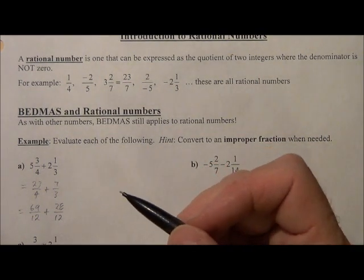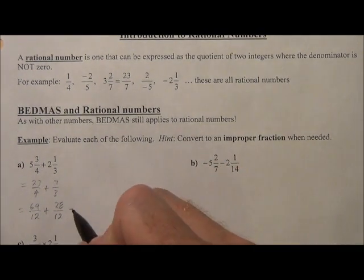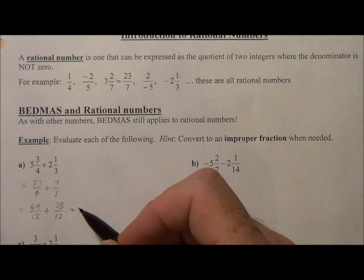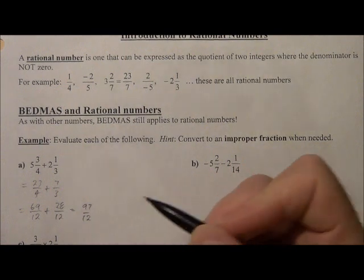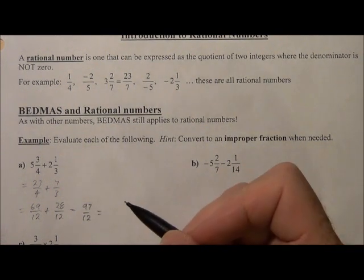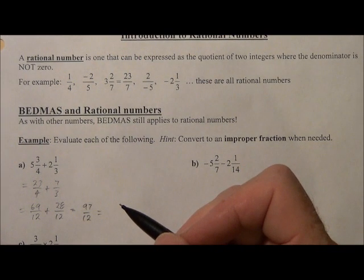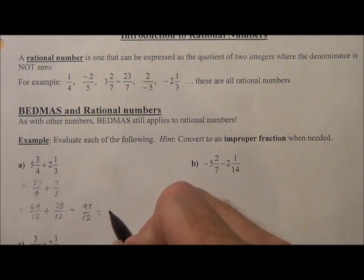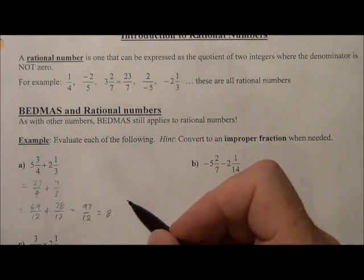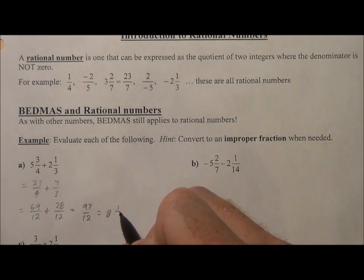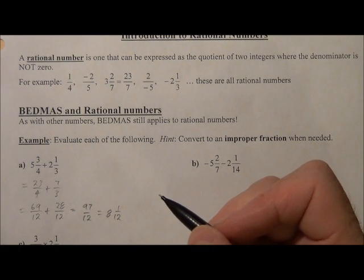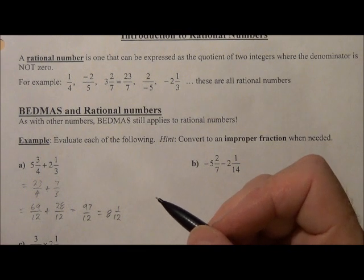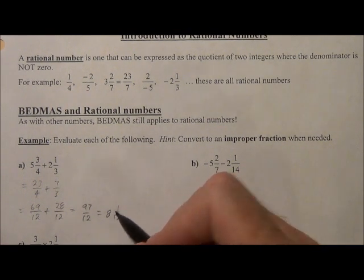And we add the numerators, leave the denominator the same. So we get 97 over 12. And then change it back into a mixed number. So we get 8 and 1 twelfth. So 8 and 1 twelfth is the final answer for this.